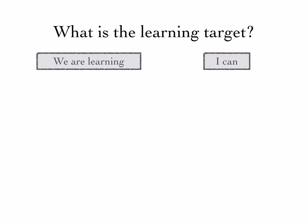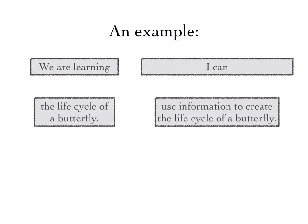So what was the learning target? What were they learning, and how were they showing what they know and are able to do? An example would be that they were learning the life cycle of a butterfly, and they were able to show what they know by using information to create the life cycle of a butterfly. There are variations on this, but that's just one example.